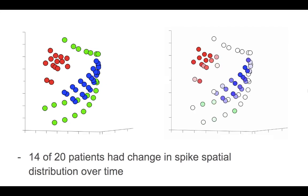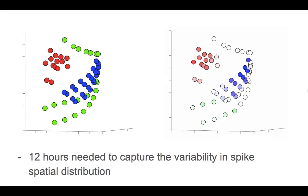The majority of our patients had a change in the spike spatial distribution over time. On average, we found that 12 hours were needed to capture the variability in spike spatial distribution.